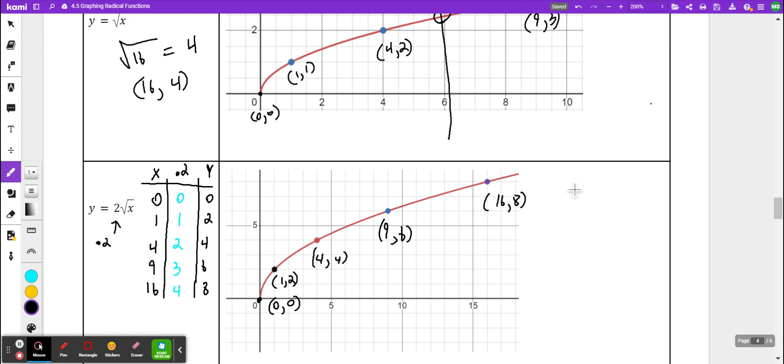So this is being stretched vertically by a factor of 2. It's getting twice as big. So as it's getting bigger, it's getting twice as tall. So instead of (4,2), it's now (4,4). Instead of (9,3), it's (9,6). So if we have something on the outside right here, we're going to be timesing it by whatever it says.